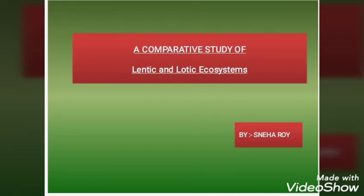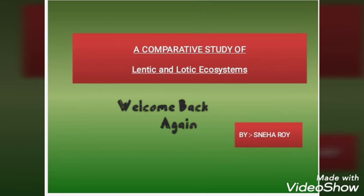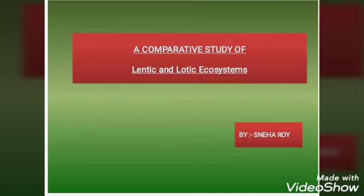I am back again with one more video. In the previous video I discussed about freshwater ecosystems and its two main types: lentic ecosystem and lotic ecosystem. There is also an additional type of freshwater ecosystem which is the wetland ecosystem, to be discussed later. This video is all about a comparative study of lentic and lotic ecosystems.